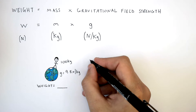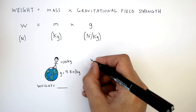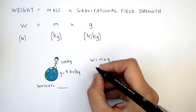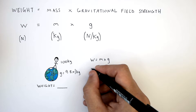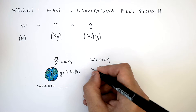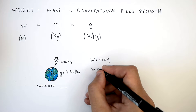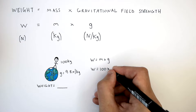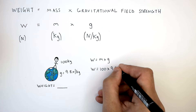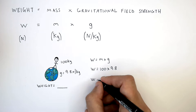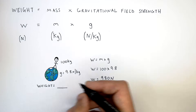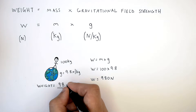The person's weight is calculated using the equation weight equals mass times gravitational field strength — W equals M times G. We use the equation as it is because we're working out W. So weight equals 100 kilograms times 9.8 newtons per kilogram, which gives you a weight of 980 newtons. So the weight of this person on Earth is 980 newtons.